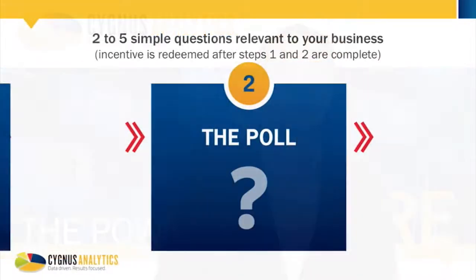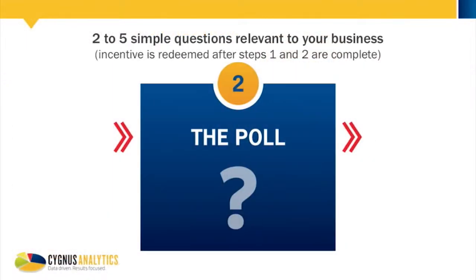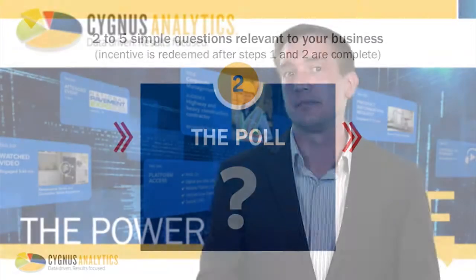Step two comes in the form of a poll. This is used to ask two to five simple research questions relevant to your business and or your campaign. These questions can cover topics such as purchase authority, buying intent, or brand awareness that ultimately add a layer of qualification to the lead.